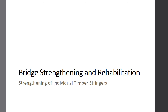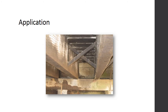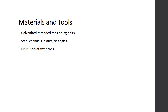It is not uncommon for individual stringers to need repair, whether due to overloading, exposure to moisture, debris impacts, or other causes. The repair methods presented are used for strengthening timber stringers or girders that have localized minor to moderate deterioration weakening the overall strength at the ends or along the span, by attaching steel or timber members using through bolts or lag bolts. Materials and tools needed include galvanized threaded rods or lag bolts, steel channels, plates or angles, drills, and socket wrenches.